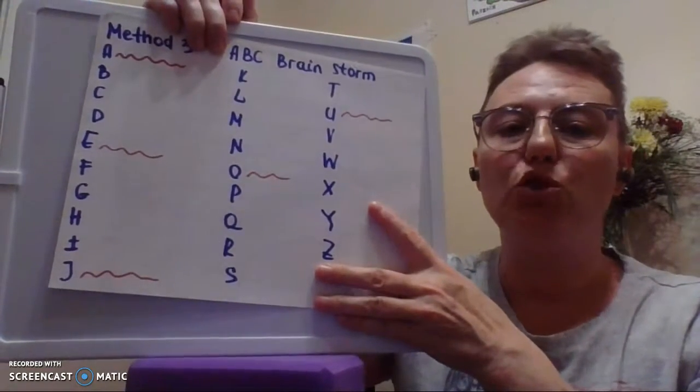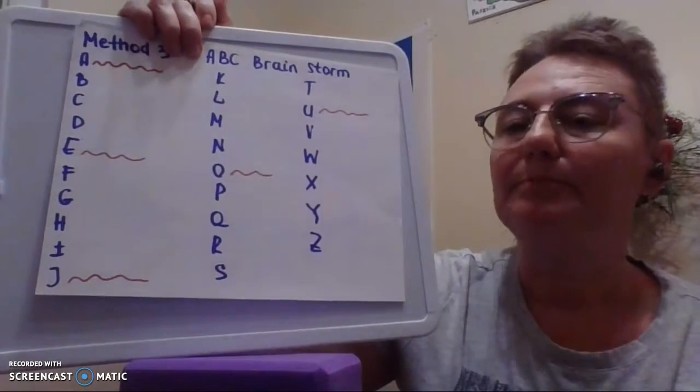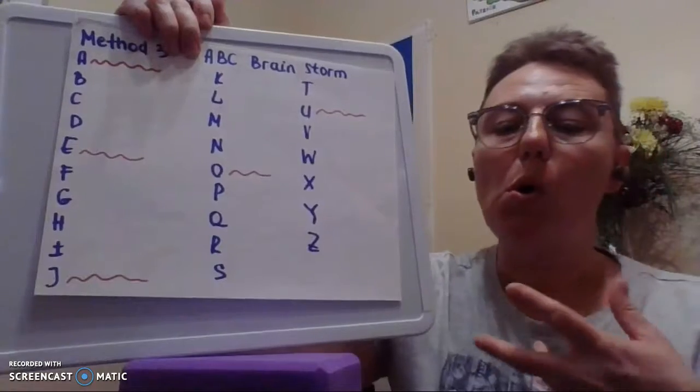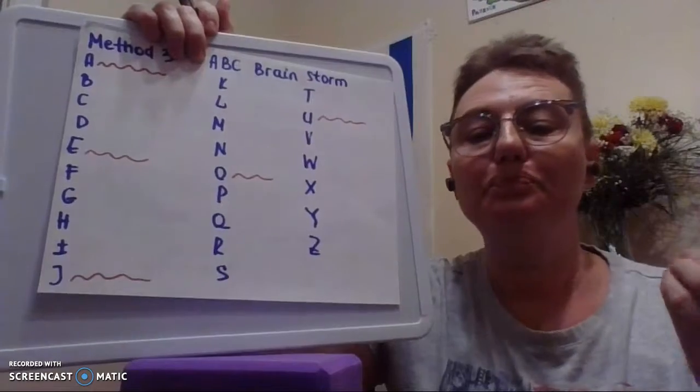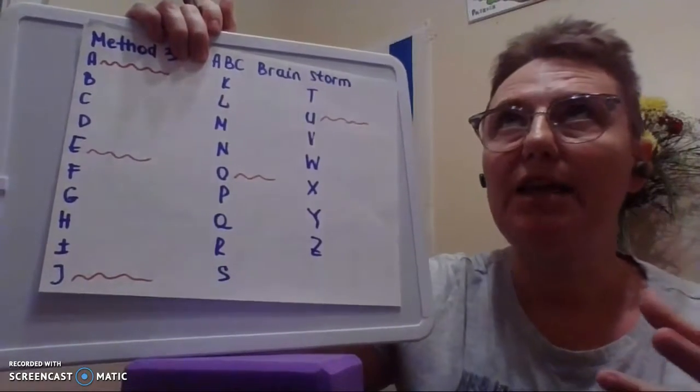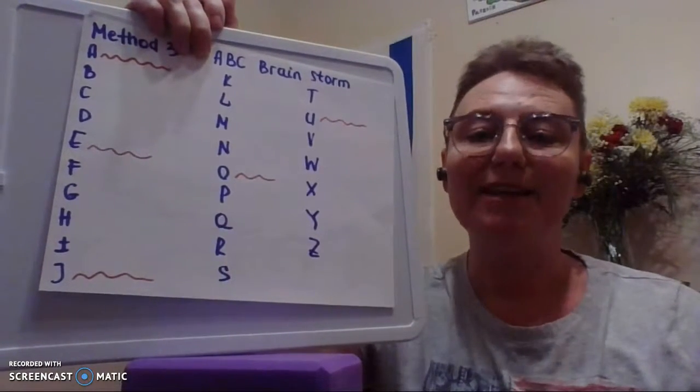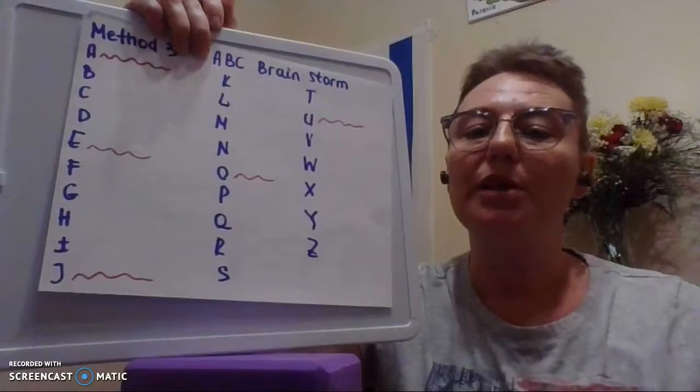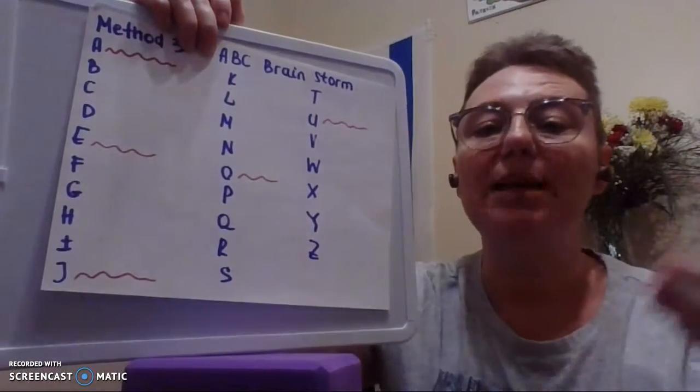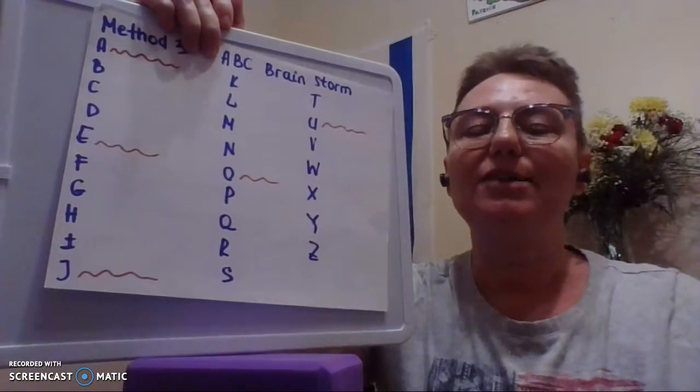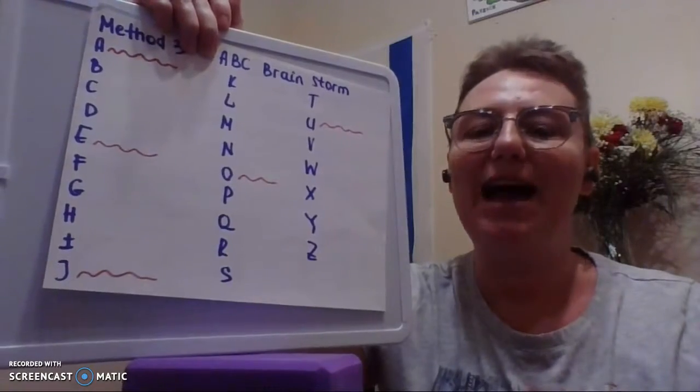So you would write the alphabet, okay? And then you will also think about, what's my topic? And I will think about, I know an idea that begins with an A. So I will write that idea or fact next to A. Maybe I know something within an E. So I will write that next to the E. Perhaps I know something with an O. I will write that next to O and so on and so forth until you get as many letters as you can fill up.